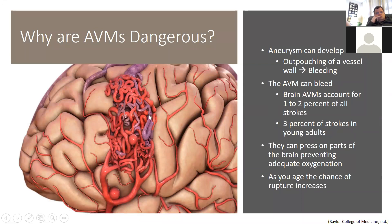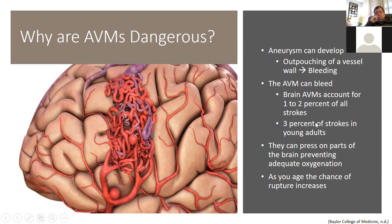When an AVM develops on the brain, what makes it dangerous? The biggest danger is bleeding — that is the most dangerous issue with an AVM, especially when you don't know it's there. Bleeding can come from bubbles or berries that form on the wall called aneurysms, or from a rupture within that tangle of vessels, which looks like a clump of spaghetti. AVM bleeds account for about 1 to 2 percent of all strokes and about 3 percent of strokes in young adults. When a bleed happens, it presses on parts of the brain, oxygen can't be delivered, and the brain suffers a stroke.